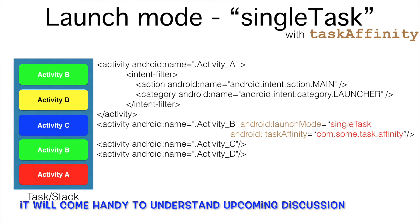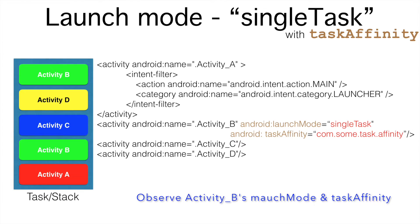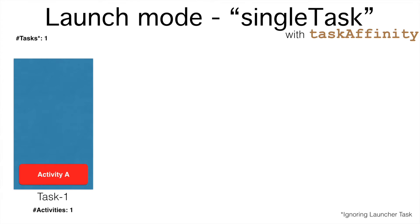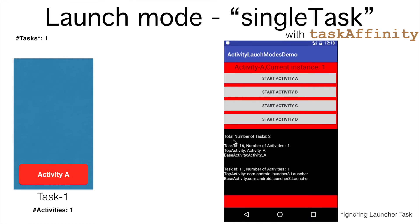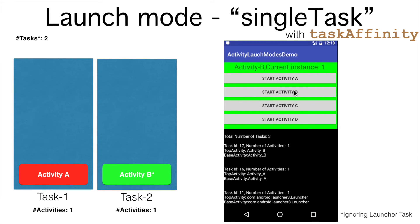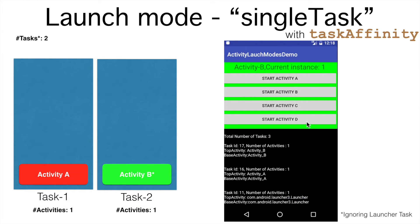I have made the launch mode of Activity B as single task and the task affinity I have given some random value — in this case it is com.sum.task.affinity. So after launching Activity A, if you trigger Activity B, Activity B will be launched as part of a separate task. The total number of tasks would be 2, and each of those tasks will have a single activity — that is Activity A and Activity B.